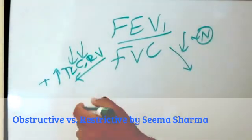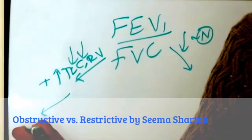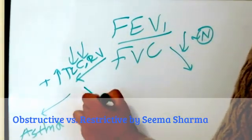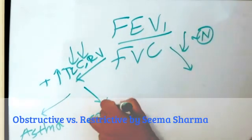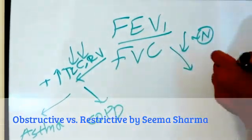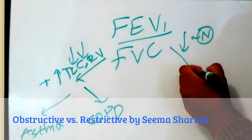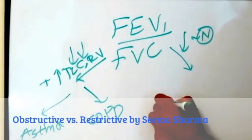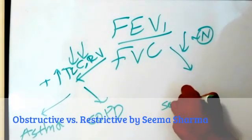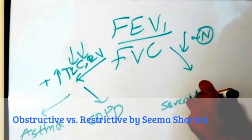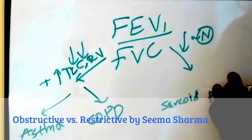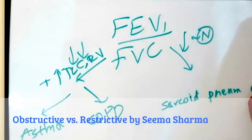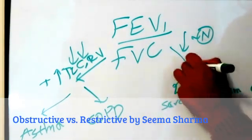Obstructive disease includes asthma or COPD. For the restrictive diseases, we have basically my etiology — so sarcoid, pneumoconiosis, asbestosis. Those are the main ones, but there are many others.